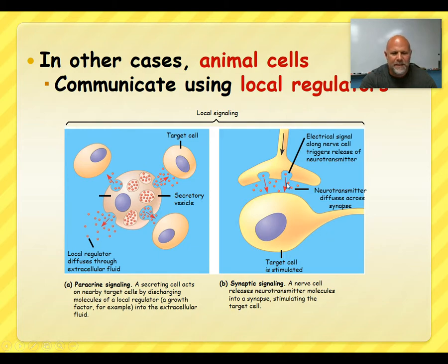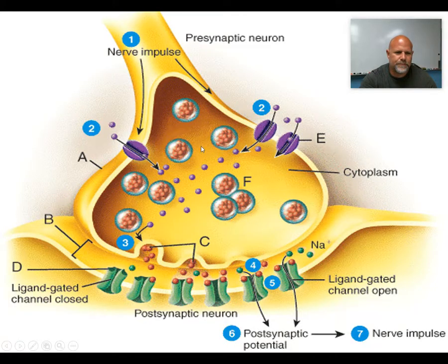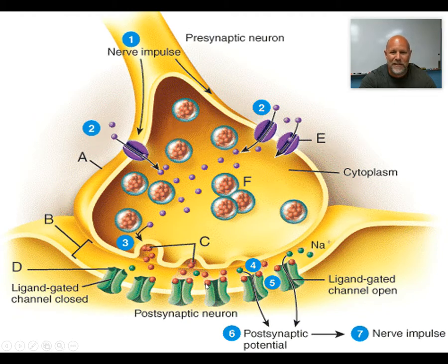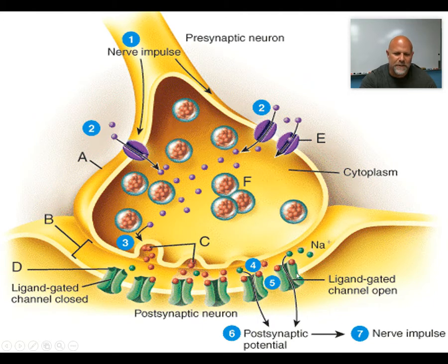Sometimes it's called synaptic signaling. Neurotransmitters are released from one cell, go and bind to a receptor, and start a new nerve impulse on the next cell, or maybe start a contraction in a muscle. Calcium flows in and binds to vesicles, signaling them to bind with the cell membrane and dump their contents into the synaptic space. The neurotransmitters move across and bind to gated channels on the other side. Those gated channels open, often letting sodium rush in, which causes a chain reaction where another nerve impulse gets carried down the next cell.